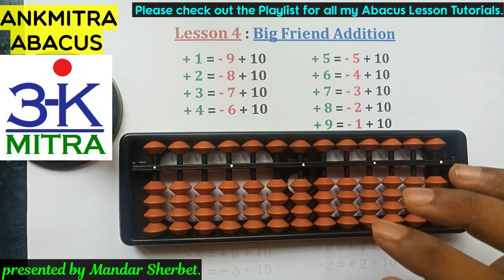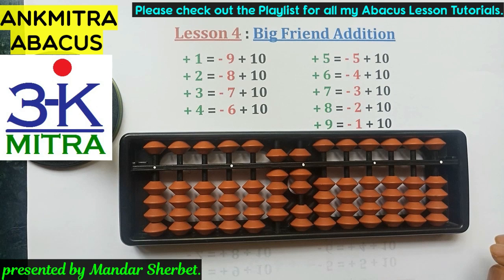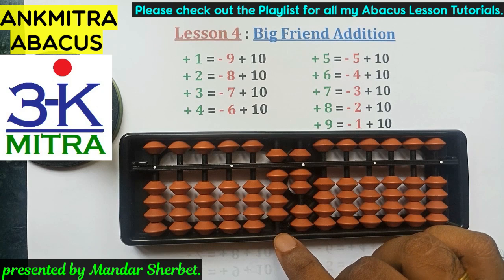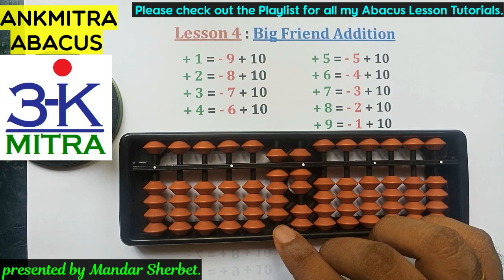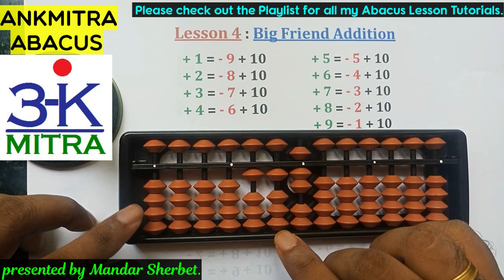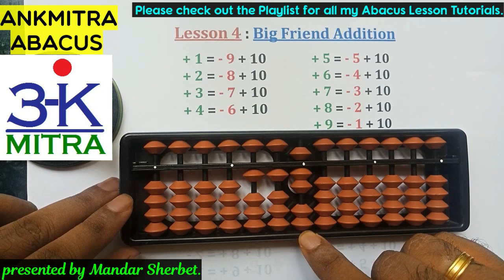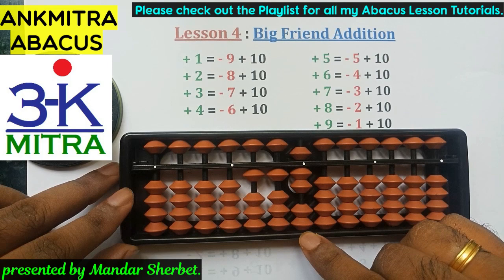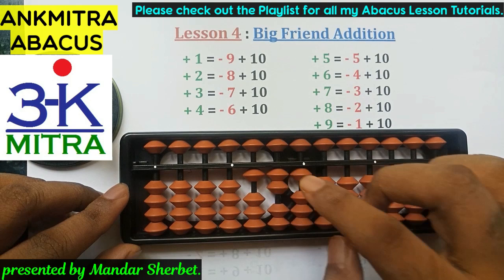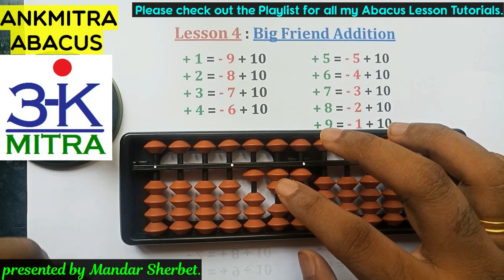Another example: 97 plus 24. To add two on the tens place rod, we don't have two beads available and the five bead is also not available, so neither directly nor via small friend works. We use the big friend of two which is eight: subtract eight on the primary rod and add ten on the next left rod. For the units place, adding four — not enough beads and the five bead is unavailable — so we use the big friend of four which is six: subtract six and add ten on the next left rod. The answer is one hundred and twenty-one.